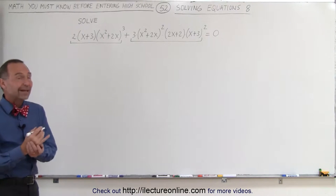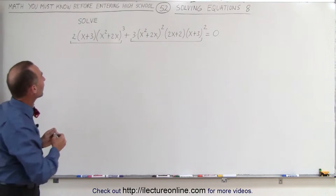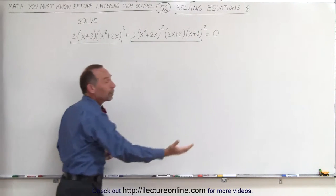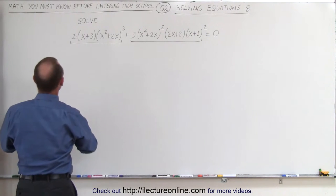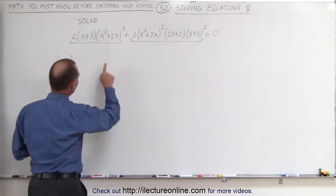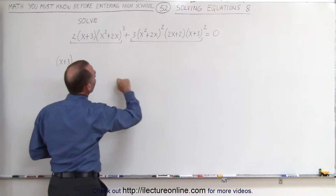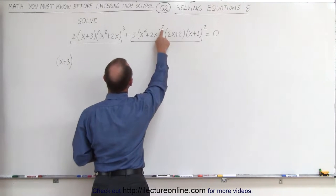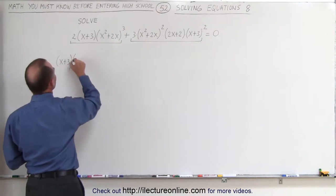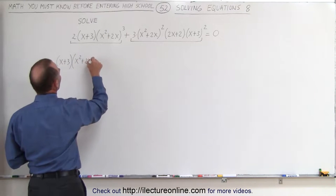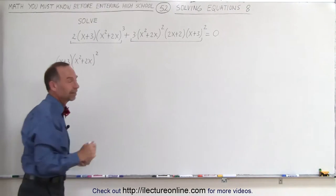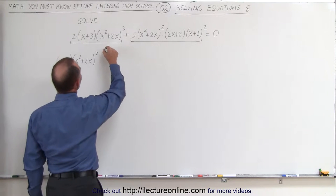What we can then try to do is factor out anything that may be common. Notice we have an x plus 3 here and we have an x plus 3 quantity squared, which means we can factor out an x plus 3. And notice we have an x squared plus 2x to the third power and an x squared plus 2x to the second power, which means we can factor out an x squared plus 2x to the second power. There's a 2 here and a 3 there, so we can't factor out either a 2 or a 3.